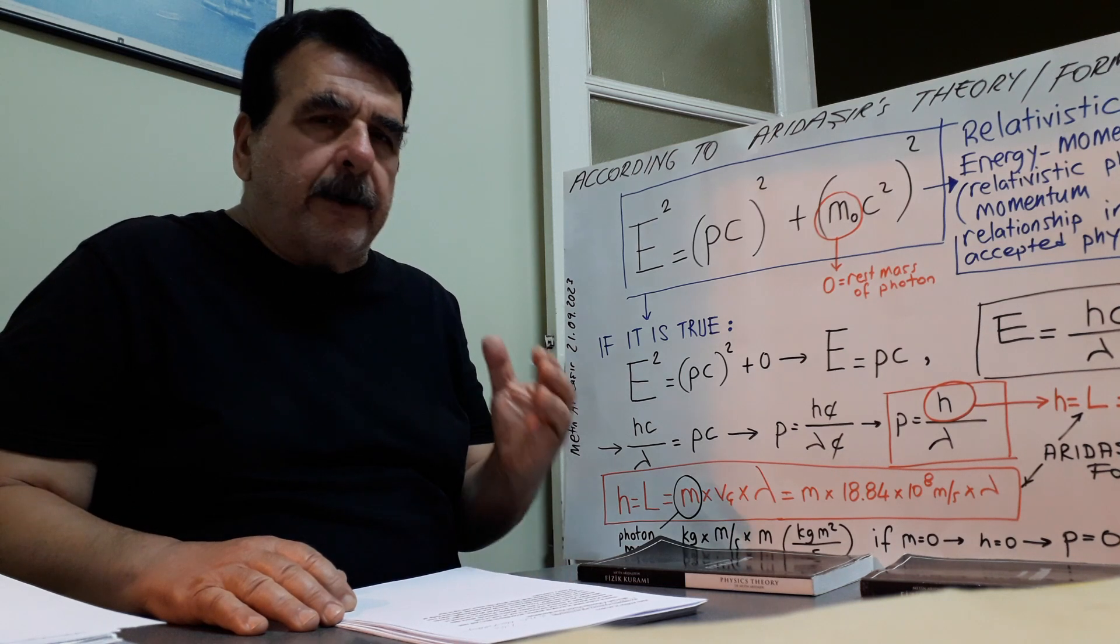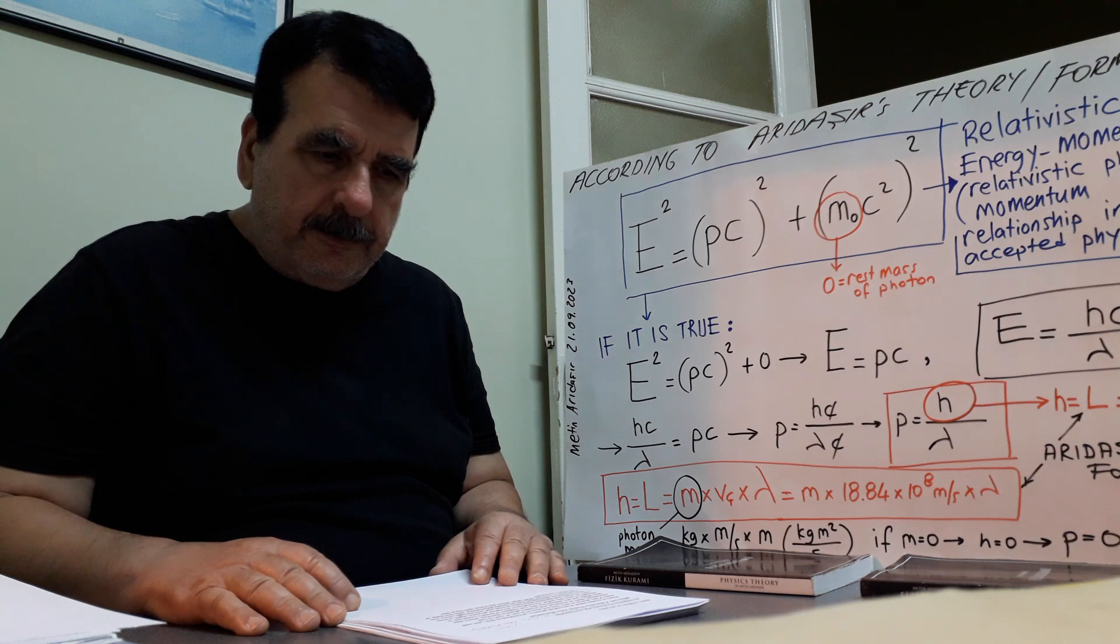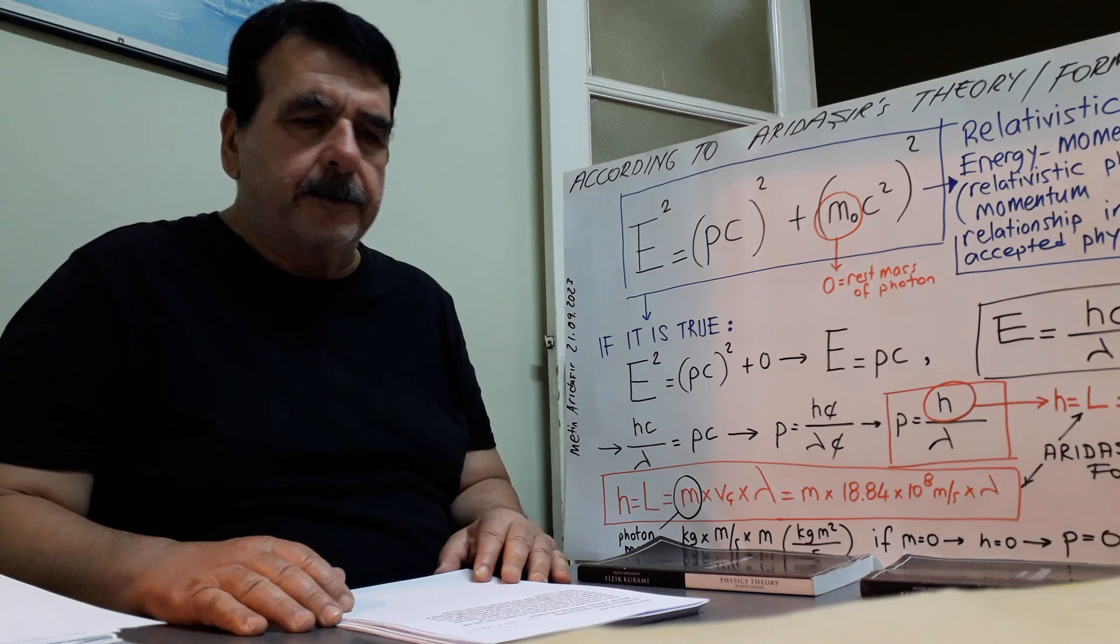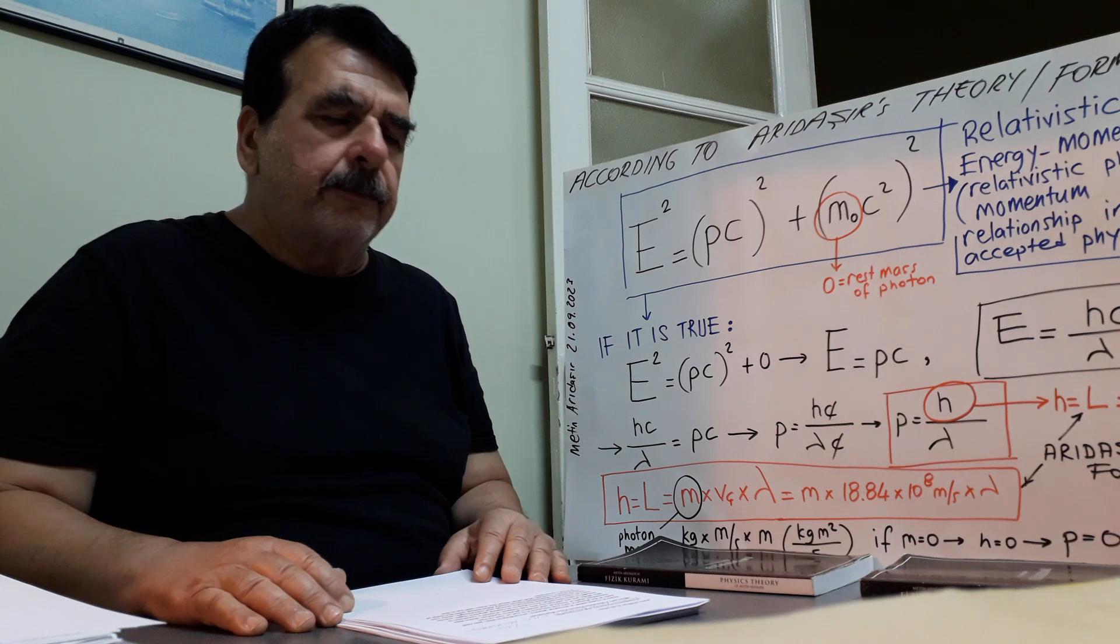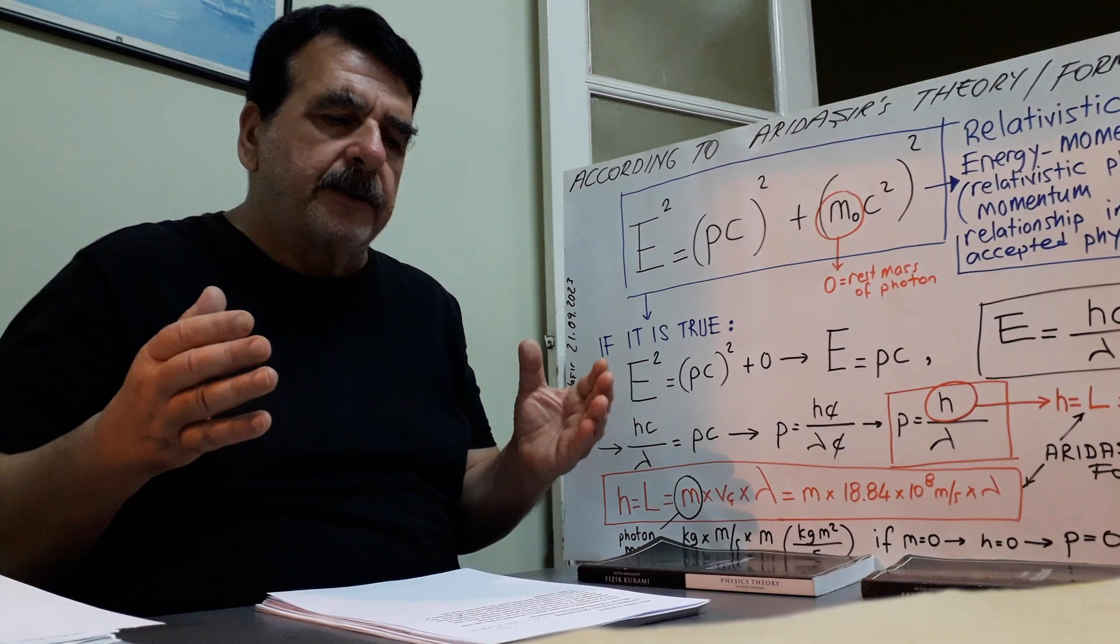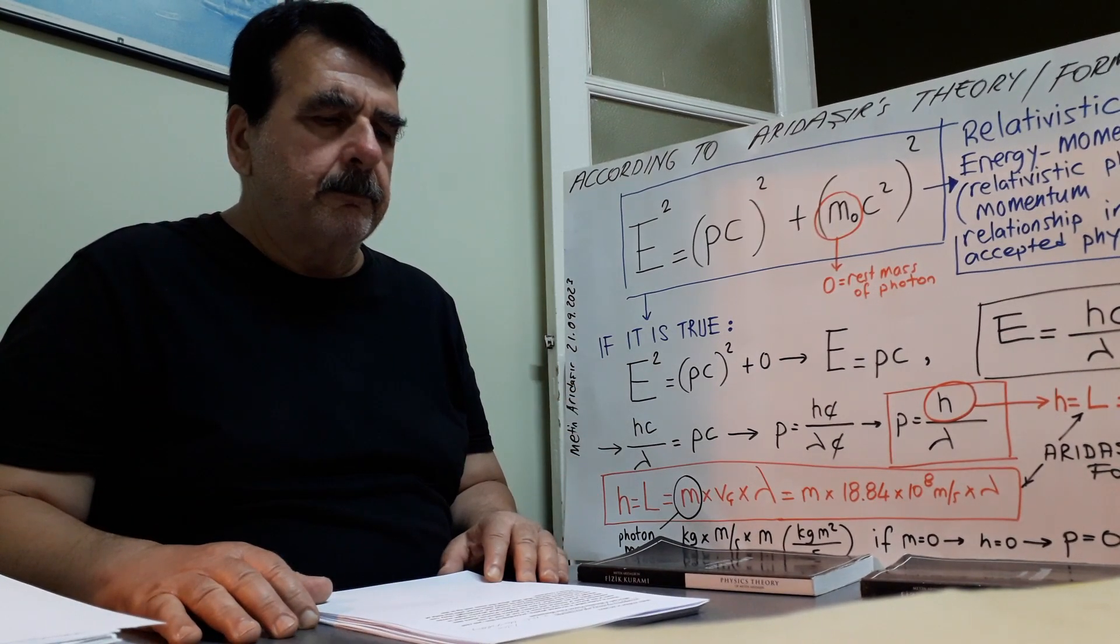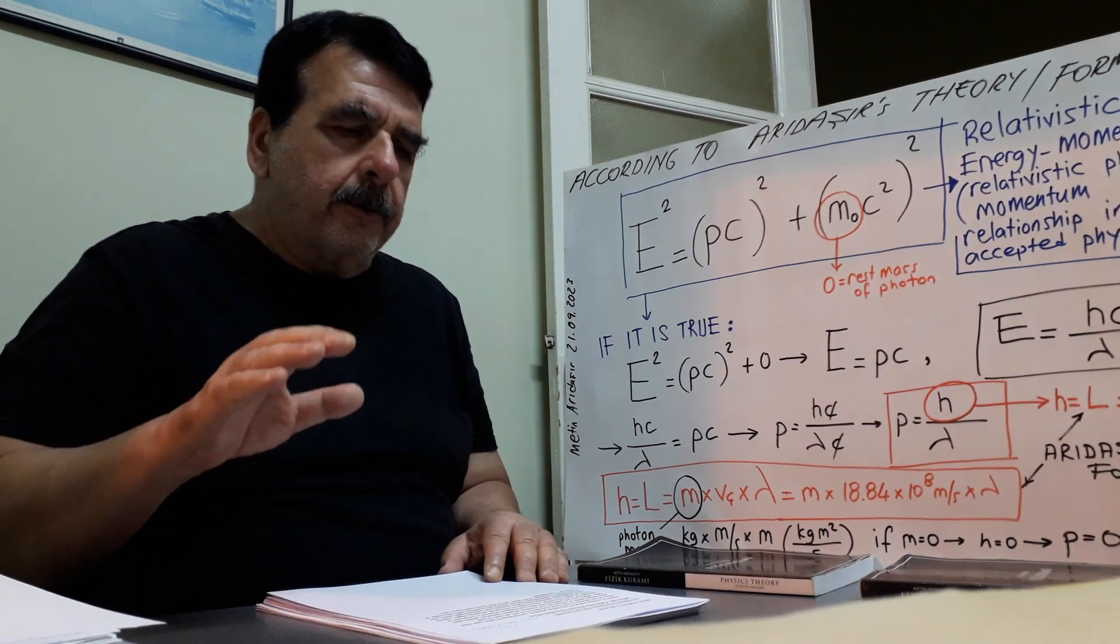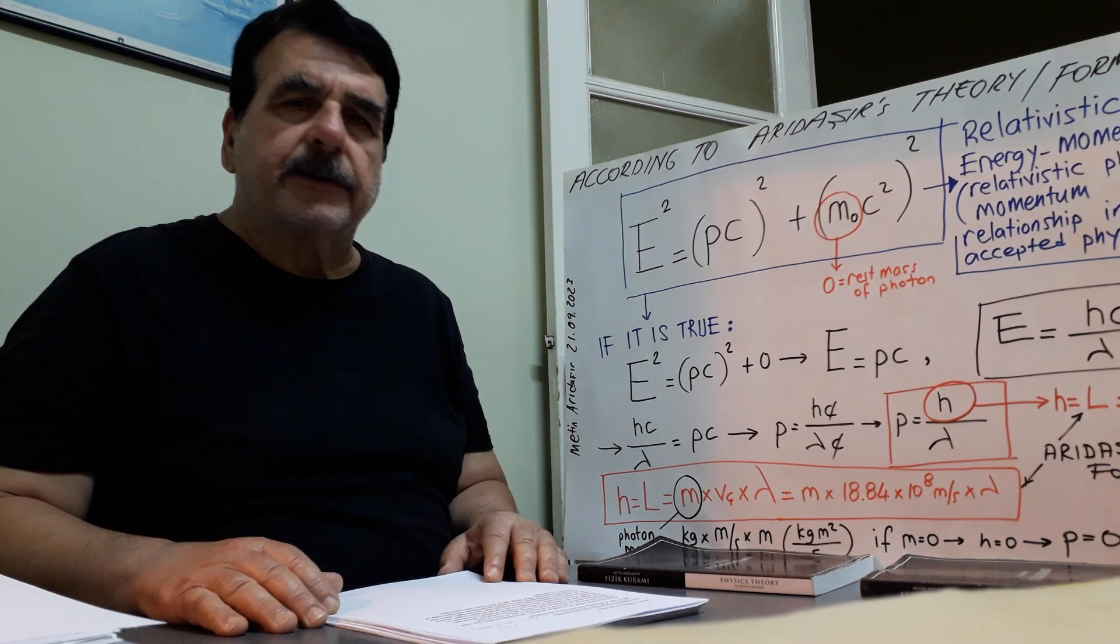There is a false belief in accepted physics. According to this, yes, rest mass of the photon is zero. But because it is not at rest, it has momentum. Both classical and modern physics theories share this idea.